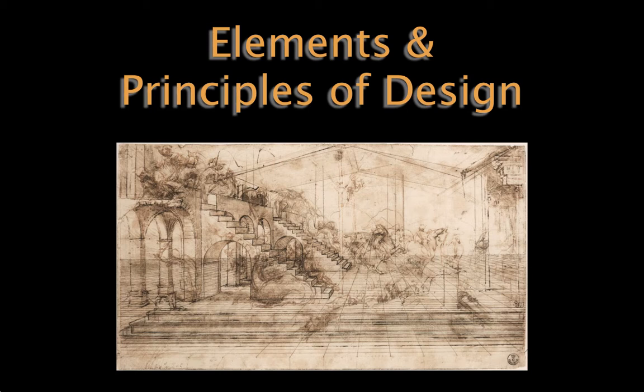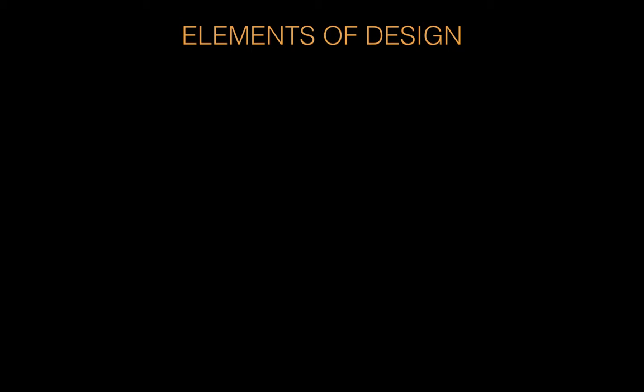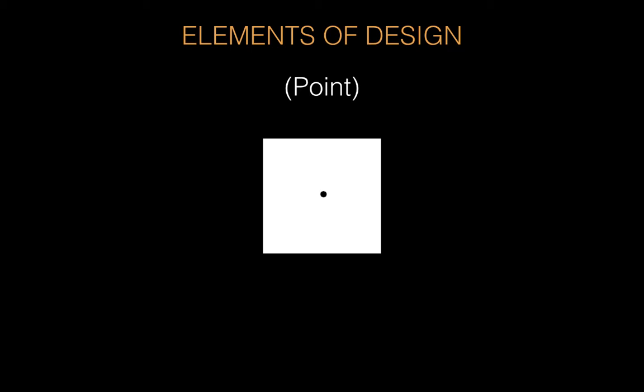We should start with the very basics — the most simple thing you can possibly have: a point. A point is technically not even an element or a principle because it is actually zero-dimensional. It doesn't exist whatsoever. It is merely a mathematical figment of our imagination that helps us locate a thing, but it is the only way to start having any elements at all. So we start with a point.